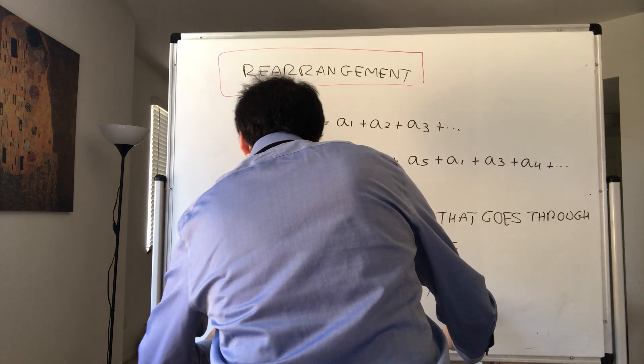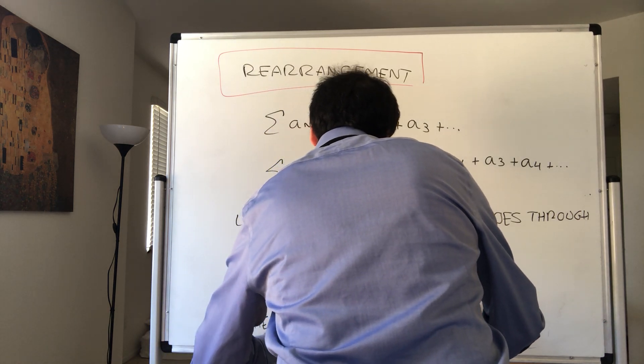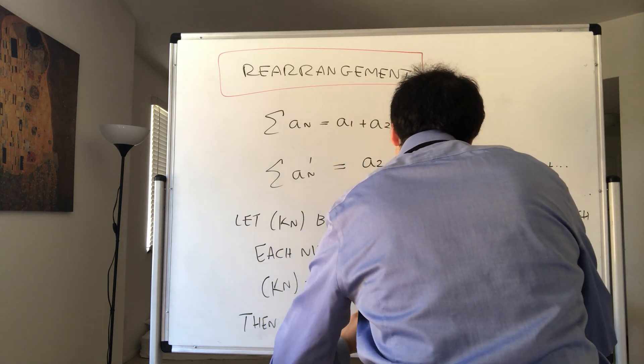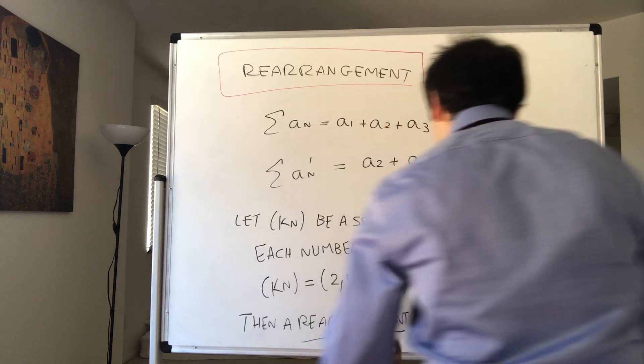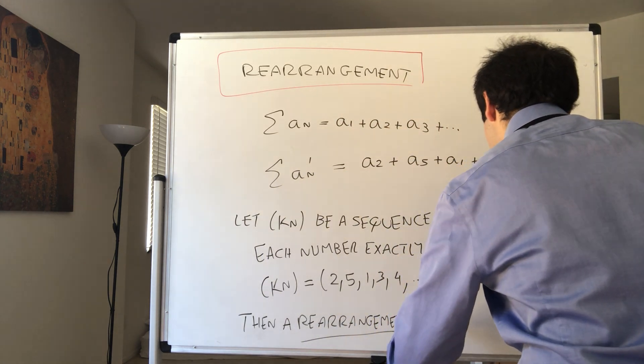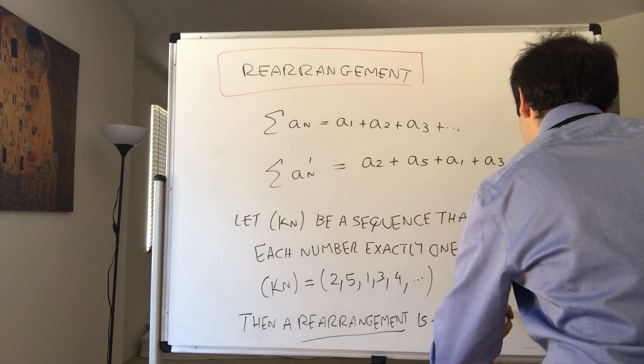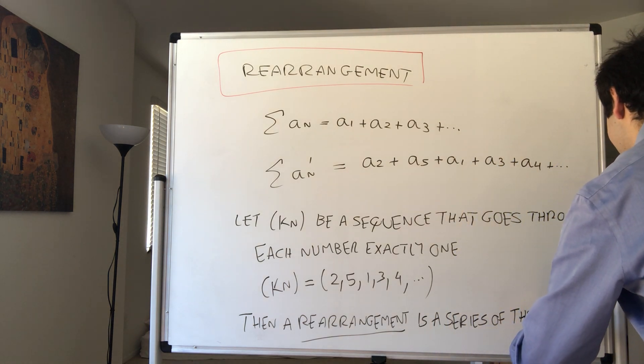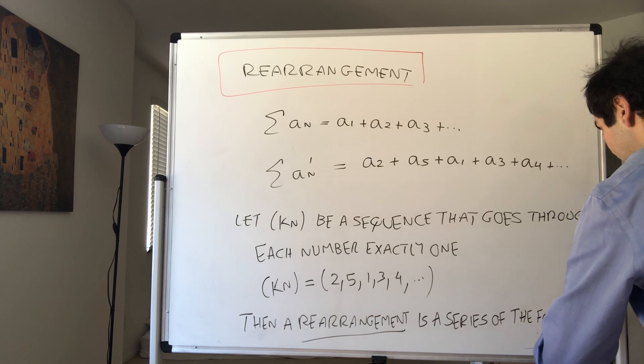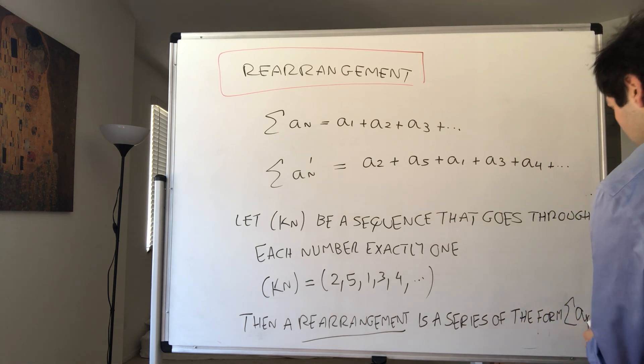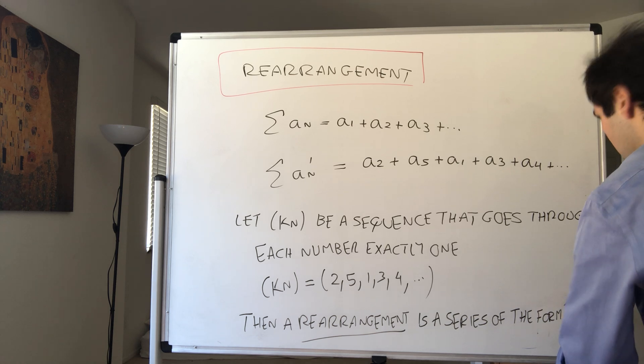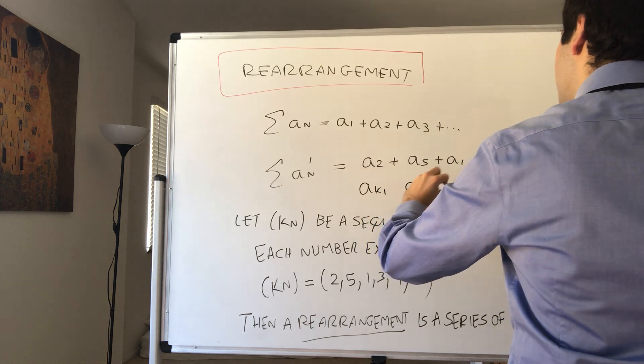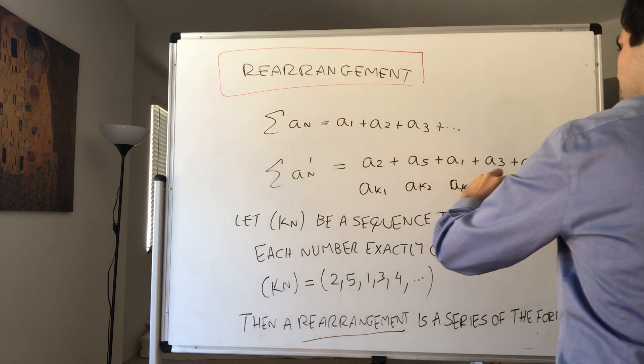Then a rearrangement is a series of the form sum of A_K_n, not A_n but A_K_n. So for instance this would be A_K1, A_K2, A_K3, dot dot dot.